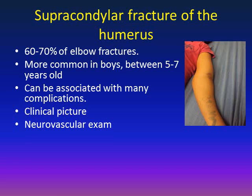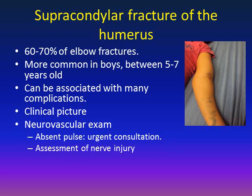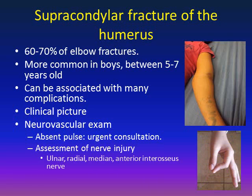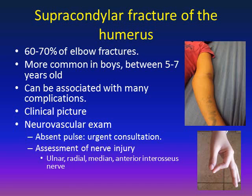Neurovascular exam is extremely important in supracondylar fractures. Absent pulse on the affected extremity is an urgent case requiring urgent consultation. Nerve injury is also common — good assessment of all nerves should be done. The injury can affect the ulnar, radial, or median nerve, or the anterior interosseous nerve — the most commonly affected nerve in supracondylar fractures. To assess the anterior interosseous nerve, ask the child to make the OK sign; inability to form a circle and extension of the DIP of the index finger indicates palsy.